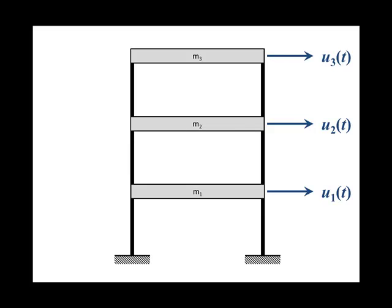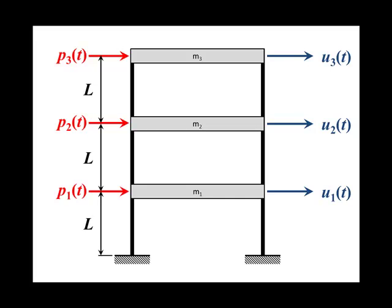There is also a force corresponding to each floor: p₁(t), p₂(t), and p₃(t). For simplicity, in this example we'll assume that each story has the same height and that all the columns have the same stiffness based on modulus of elasticity E and moment of inertia I.